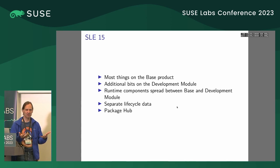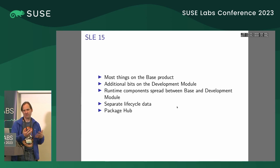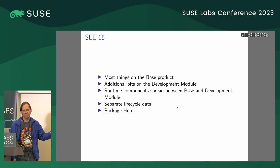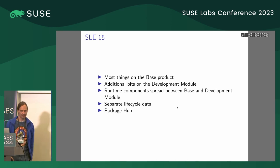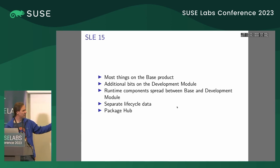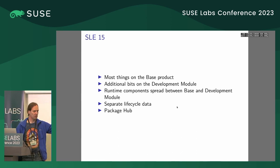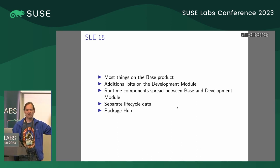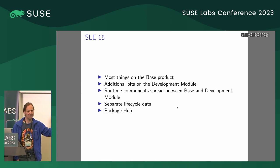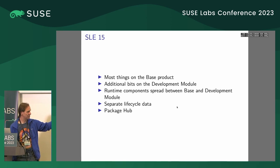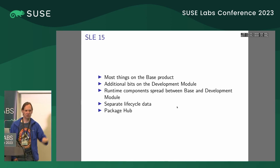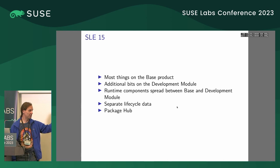For interpreted languages, you have to have the whole thing where you actually want to run the scripts. We don't want to have Python only on the development module, because you also need the whole Python thing to run Python code. For SLEE 15, there's lifecycle data at a slightly more fine-grained level, definitely separate for the base product and for the development module, which puts different constraints on supportability — for example on the C++ runtime versus the actual compiler.